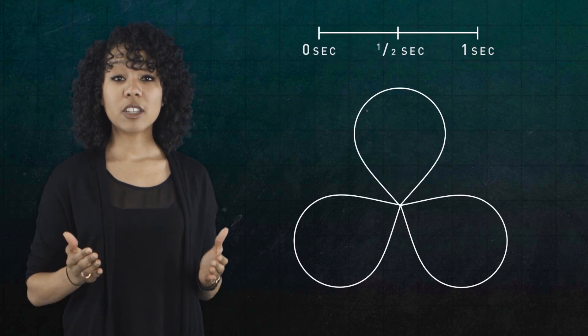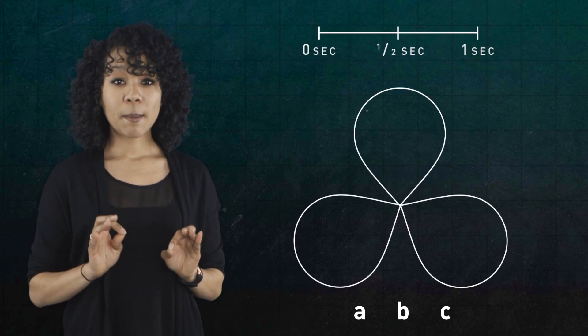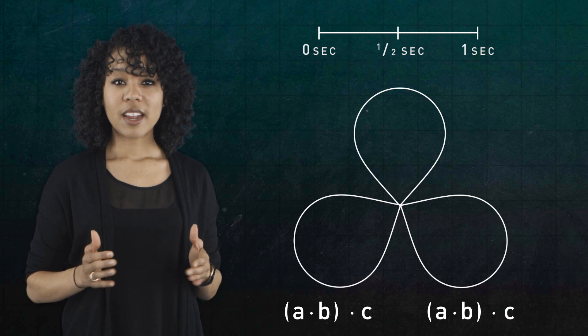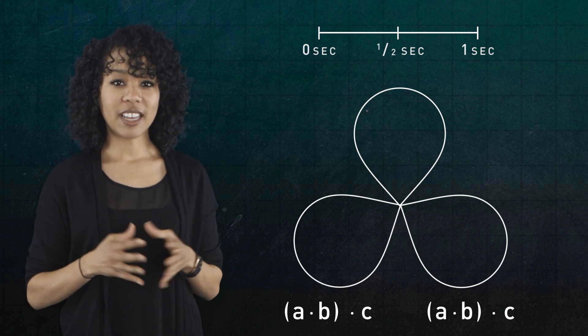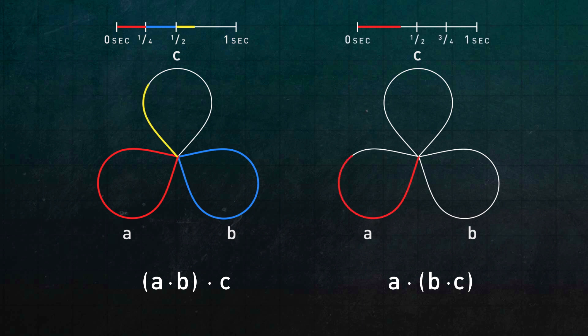To see this, suppose we have three loops, A, B, and C. And let's compare the two ways we can multiply them. This is just the two ways we can put parentheses around two of the letters. These two loops are not the same because the time in which the red, blue, and yellow cars do their traveling is different.